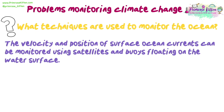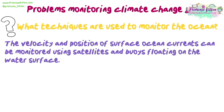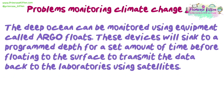One example we haven't mentioned yet is what techniques we use to monitor the ocean. The velocity and position of surface ocean currents can be monitored using satellites and buoys floating on the water surface. It is important that we measure these factors as slowing currents or currents that have changed position or direction can lead to changes in the climate and can also signify that events such as El Niño or La Niña are happening. The deep ocean can be monitored using equipment called Argo floats, which sink to a programmed depth for a set amount of time before floating to the surface to transmit the data back to laboratories using satellites.